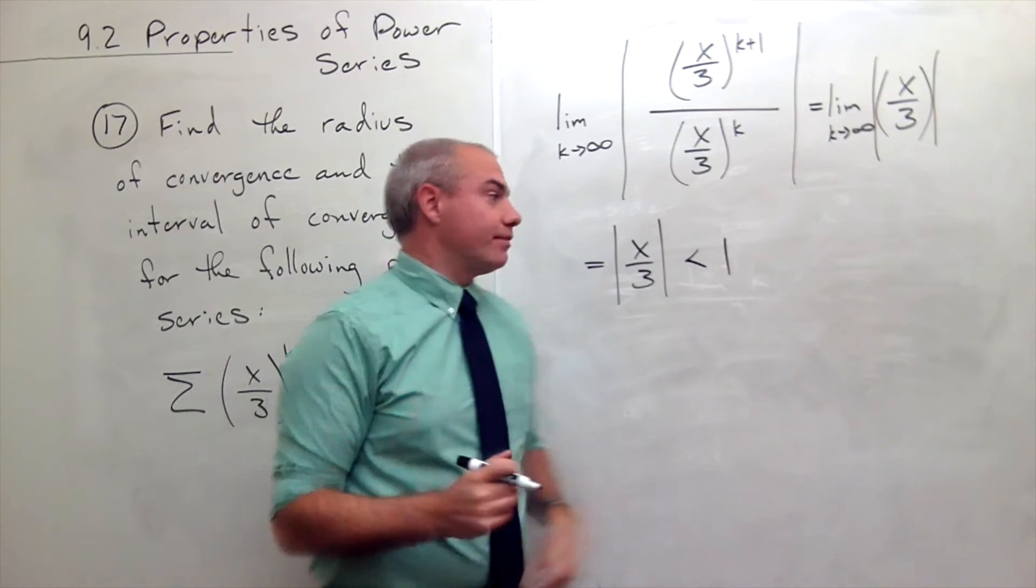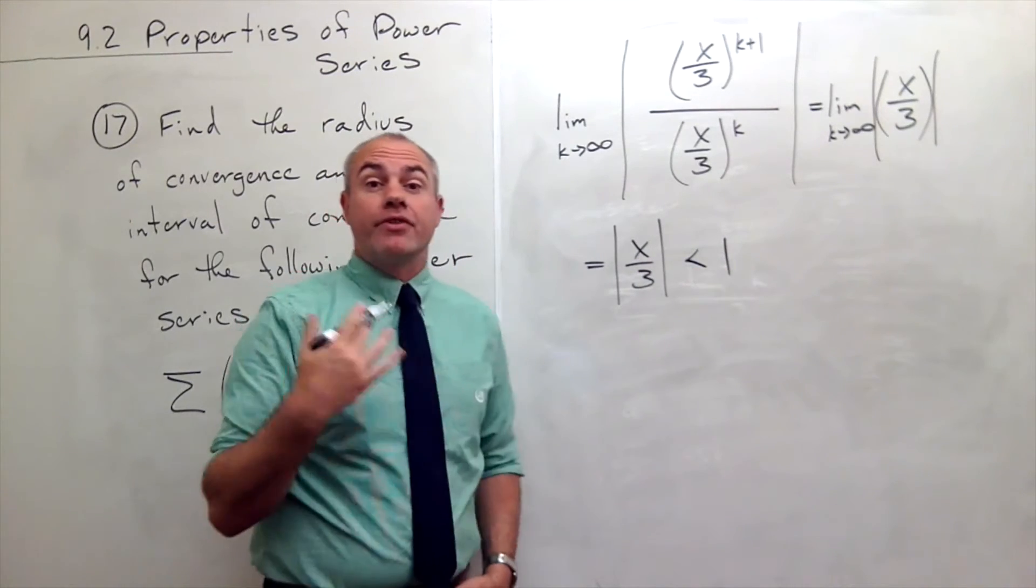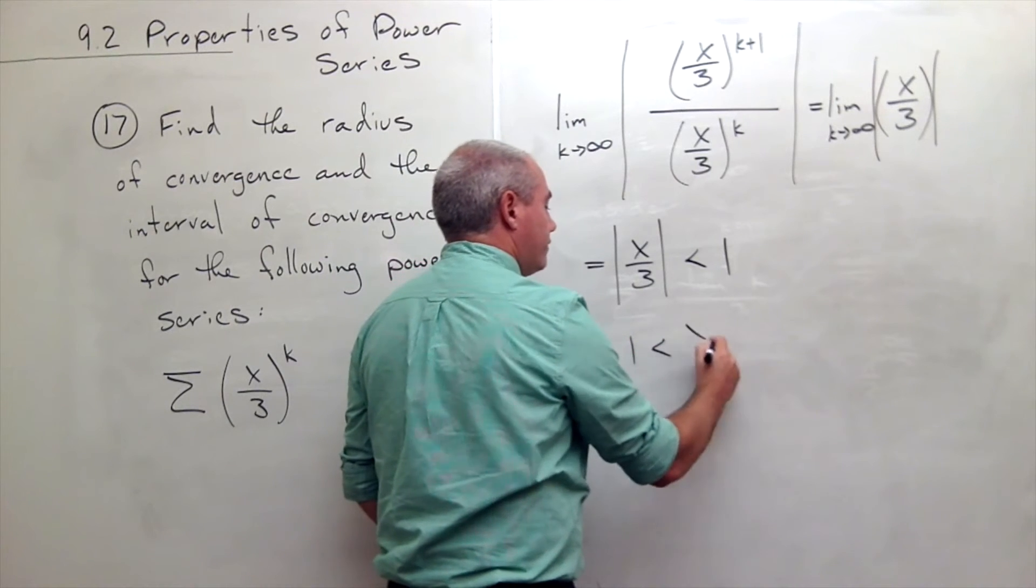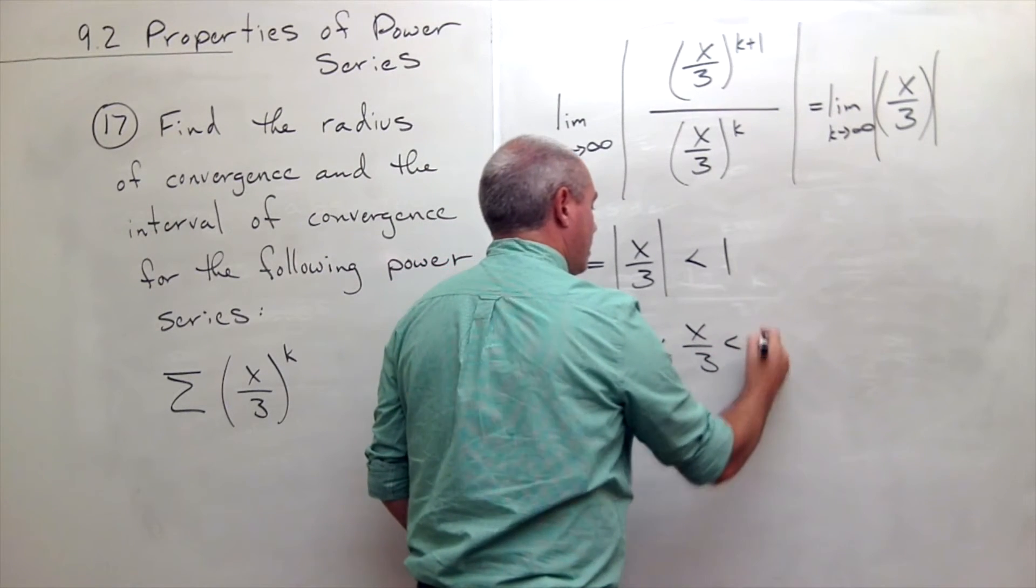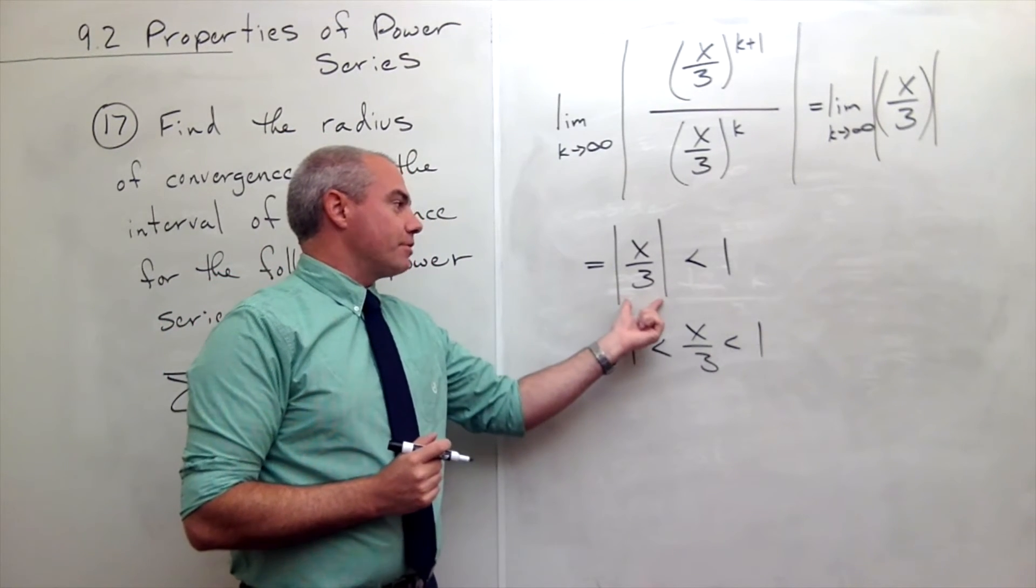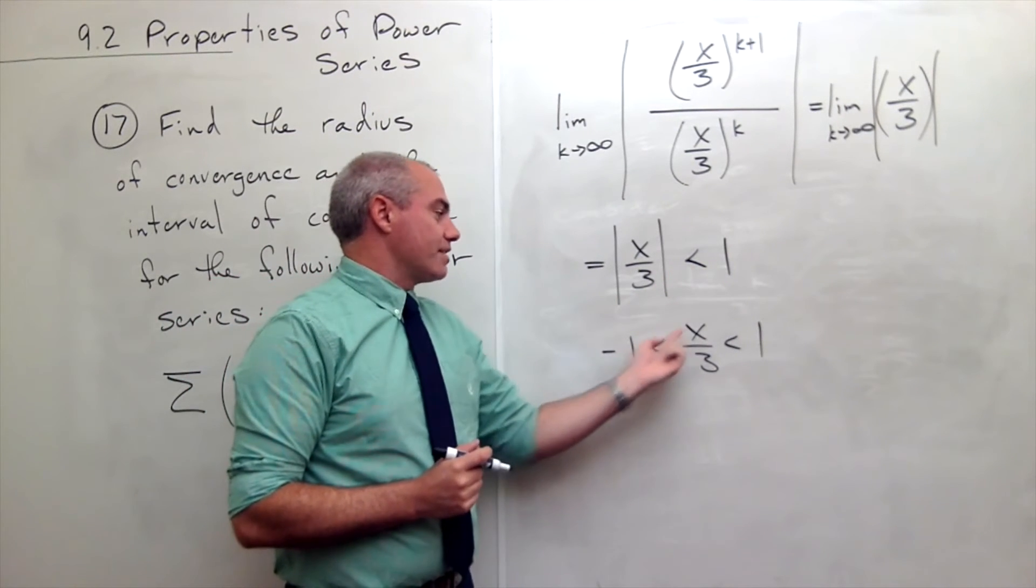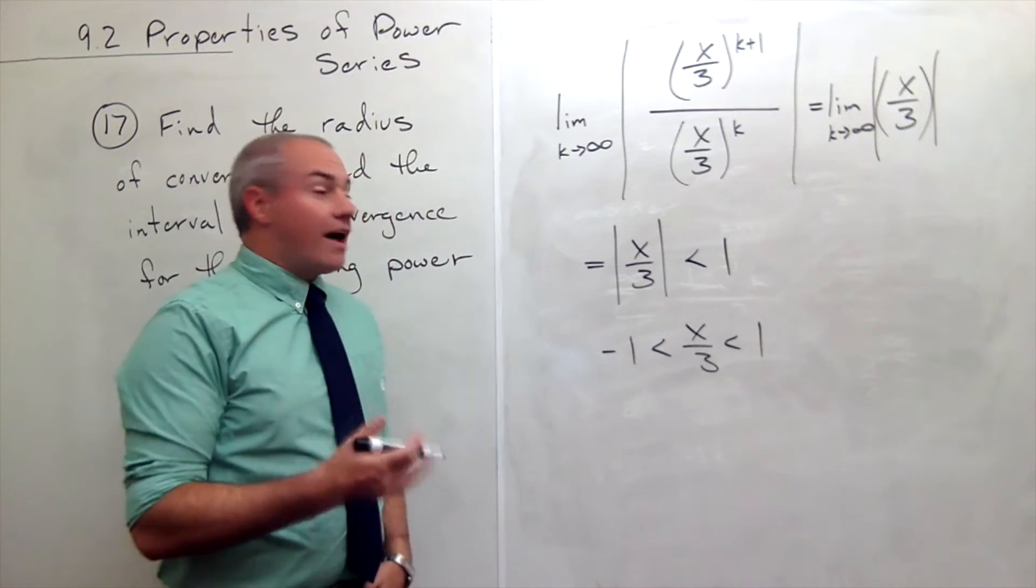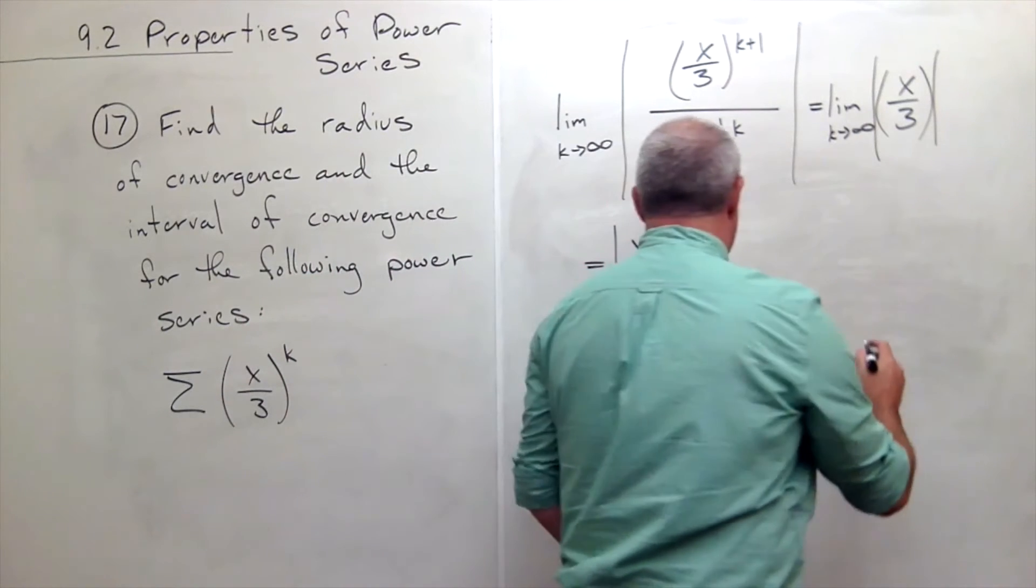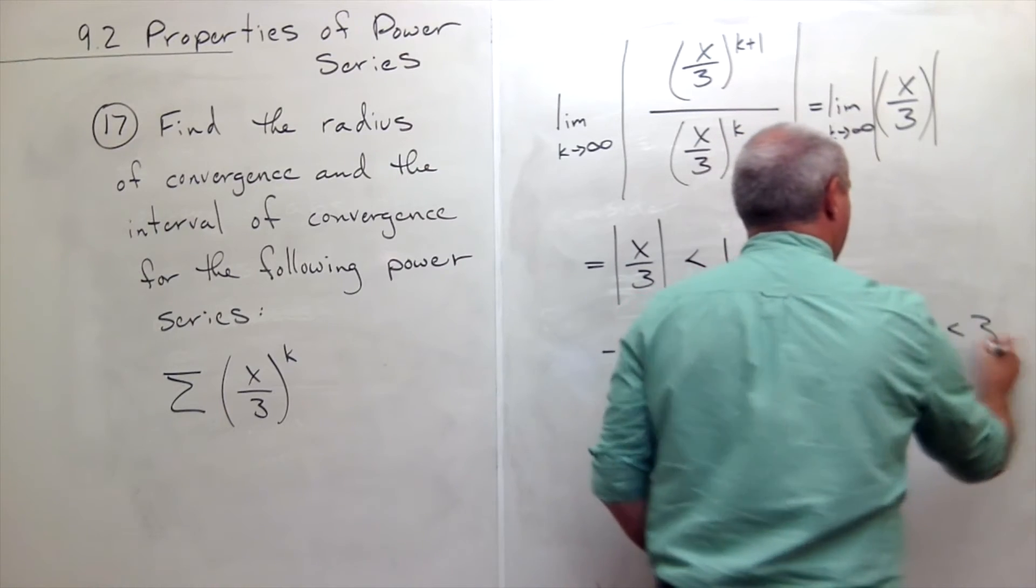When does that happen? Well, if the absolute value of x/3 is less than 1, another way of saying that is that x/3 lives between -1 and 1. So this is the same thing. The absolute value of x/3 being less than 1 is the same thing as -1 being less than x/3 is less than 1. Now I can multiply all sides by 3, and I get that -3 is less than x is less than 3.